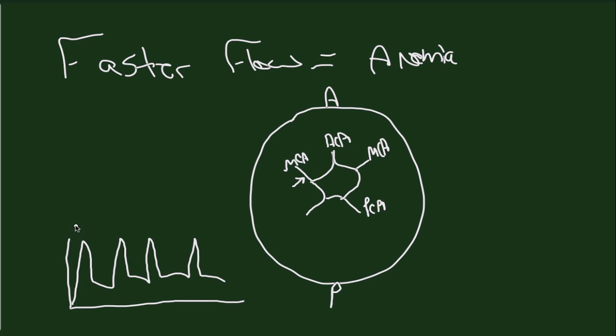This represents systole and this represents diastolic flow in the middle cerebral artery. What gets measured is the peak systolic velocity, which is represented by the peaks here and here and here. The risk of anemia is highest in fetuses with a peak systolic velocity of 1.5 multiples of the median or higher.